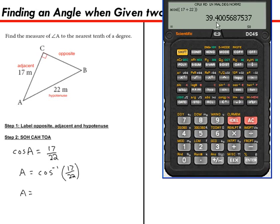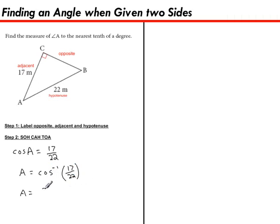Now, your calculator might work a little bit differently. You might need to punch in the 17 divided by 22 first, and then hit your inverse cos button. So angle A is 39.4 degrees. And that's rounded to the nearest tenth of a degree, like the question asked for.